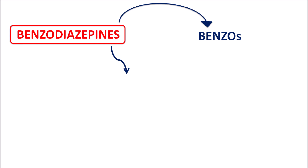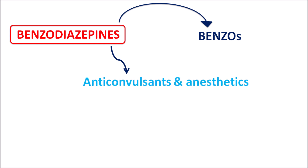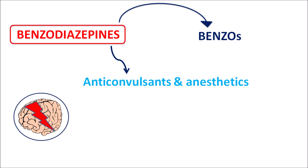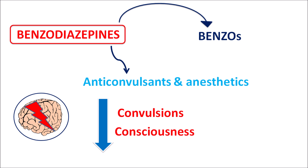Benzodiazepines can also be used as anticonvulsants and anesthetics. They can reduce convulsions — for instance, diazepam can be used to control status epilepticus, controlling uninterrupted seizures. These drugs can reduce convulsions as well as reduce consciousness, which is why they can also be used as IV anesthetics. These are the clinical indications of benzodiazepines.